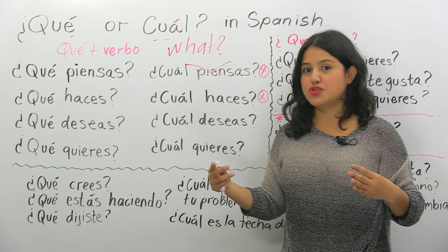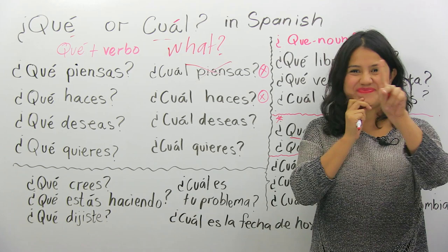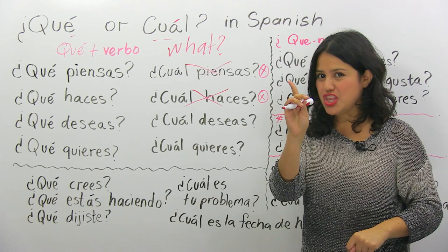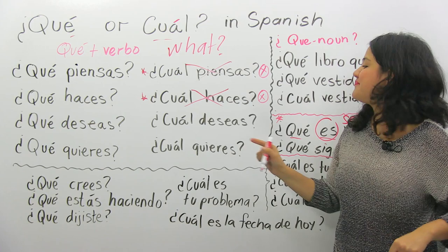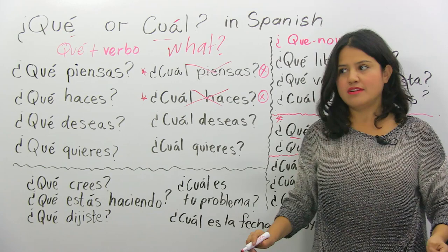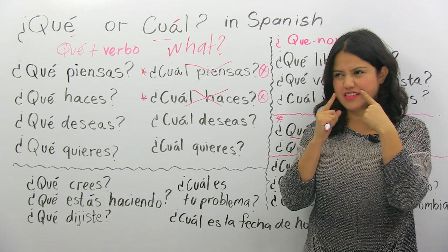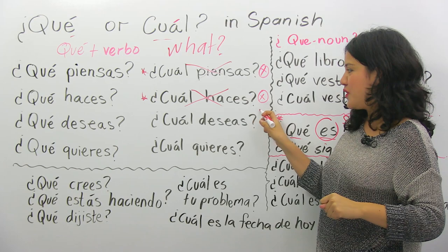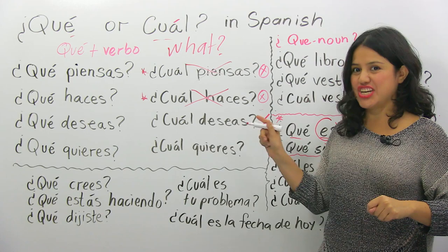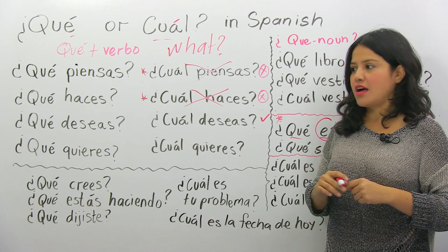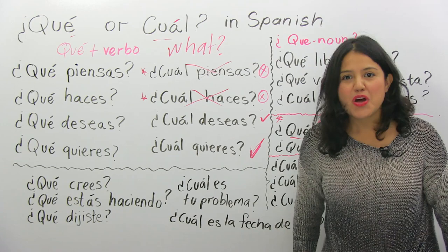¿Qué haces? — what are you doing? ¿Cuál haces? — no, tache. ¿Qué deseas? — what do you desire? ¿Cuál deseas? — that doesn't sound that weird. ¿Cuál quieres? — palomita. ¿Cuál es la diferencia? You are going to use qué when you have a verb that implies a general, broader, non-specific answer. And you're going to use cuál when you are asking for something that belongs to the same family.